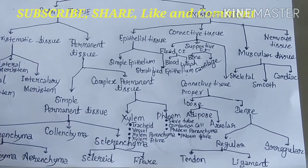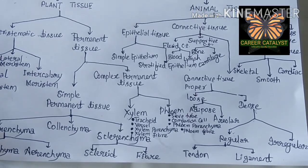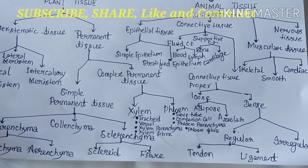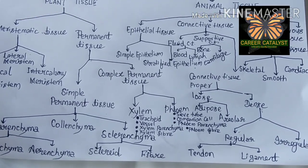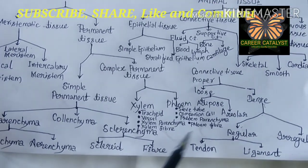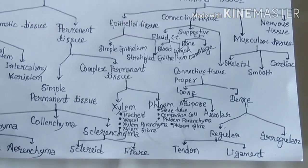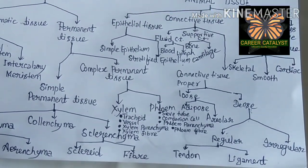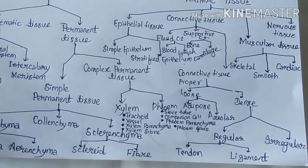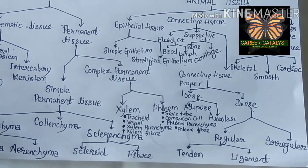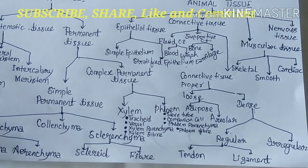Dense connective tissue proper, as the name suggests, is not loose — it is dense. The fibers and fibroblasts present are densely packed. Dense connective tissue proper is of two types: regular and irregular. Regular dense connective tissue proper is of two types: tendon and ligament.